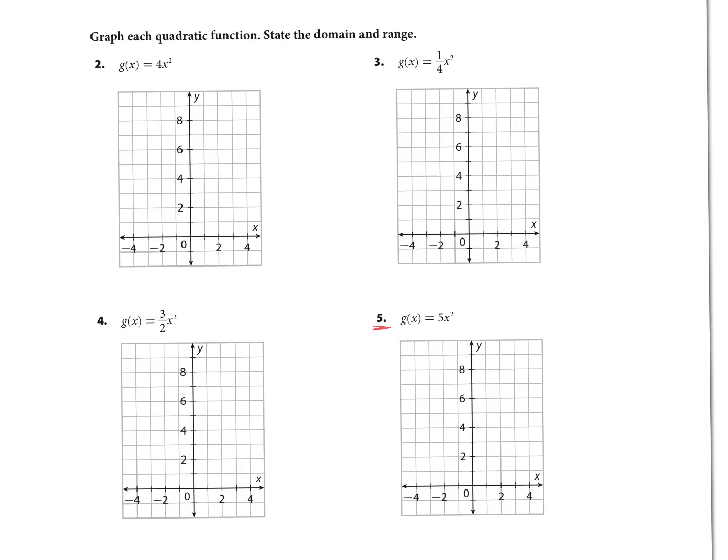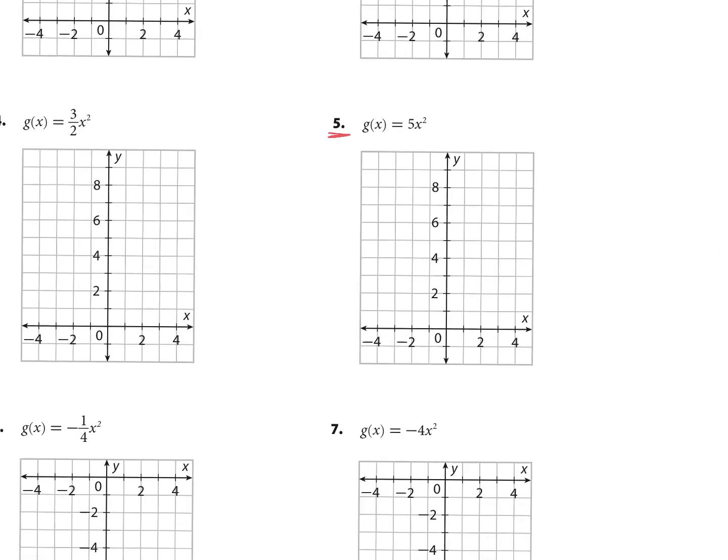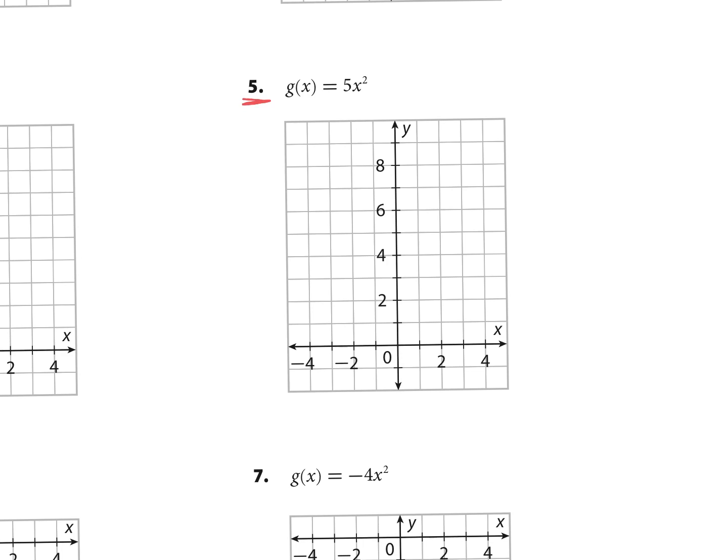The next problem says graph each quadratic function, state the domain and range. We have our parent function which is y = x². I'm going to write the values for our parent function. I'm always going to start at (0,0) for our vertex, and remember it goes negative one one, one one, and then we have this increase by three. So we go up by three and then the next time we'll go up by five.